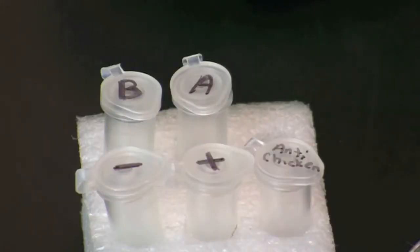For this activity we will be using 20 microliters each of test sample A, test sample B, positive control which is chicken serum, negative control which is phosphate buffered saline or PBS, and anti-chicken which contains an antibody against chicken yolk.